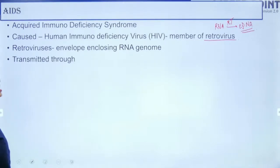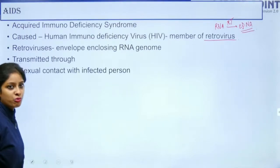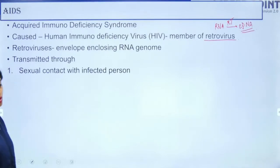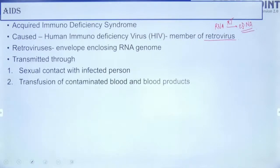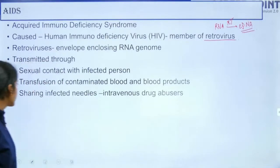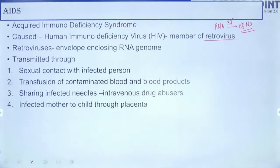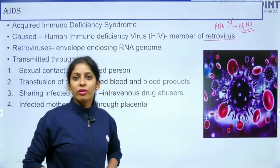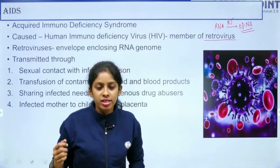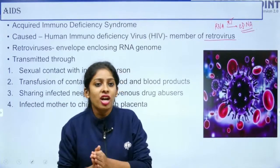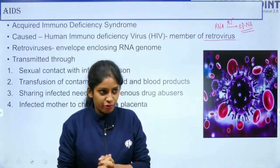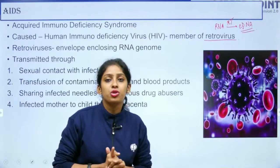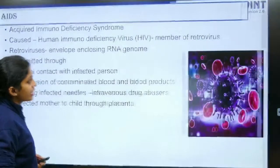HIV is transmitted through sexual contact with an infected person, transfusion of contaminated blood and blood products, sharing infected needles (intravenous drug abusers), and from infected mother to child through the placenta. We have no vaccine and no complete cure for AIDS, so caution is essential.